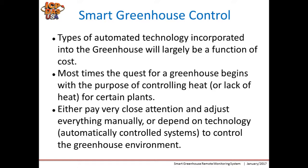How much and what types of automated technology we incorporate into a greenhouse will largely be a function of cost. Low-tech or zero-tech is the least expensive, but it means you have to do all the work manually with human power. If it gets too hot, you have to manually open or close the greenhouse windows or door, and you have to remember to close them back up in the evening before all the heat is lost.